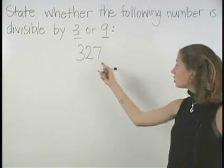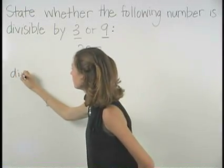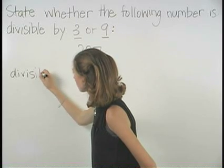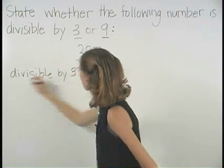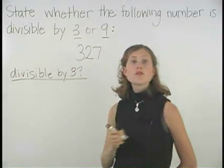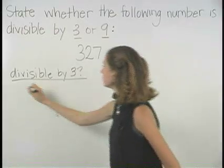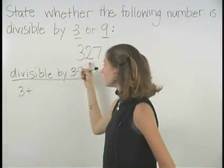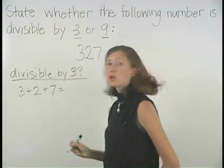For example, to determine if 327 is divisible by 3, first we need to find the sum of the digits, so 3 plus 2 plus 7, which is 12.